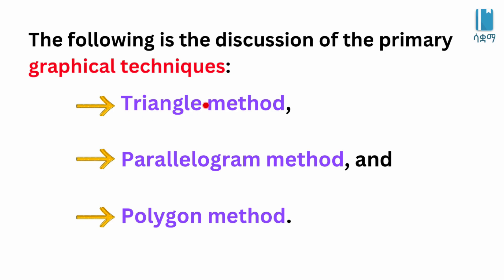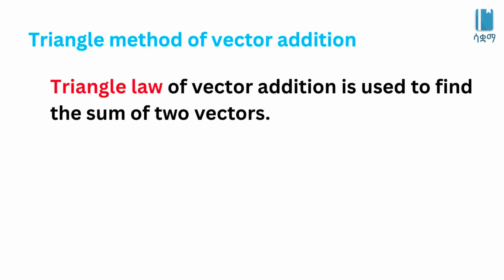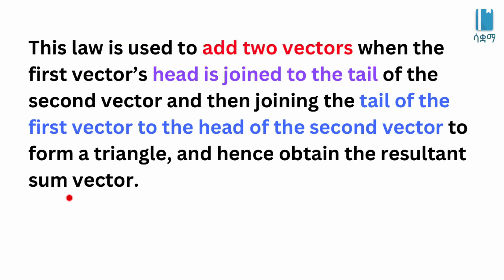Here I'm just going to mention the Triangle Method of Vector Addition. This law is used to add two vectors when the first vector's head is joined to the tail of the second vector, and then joining the tail of the first vector to the head of the second vector to form a triangle and hence obtain the resultant vector.